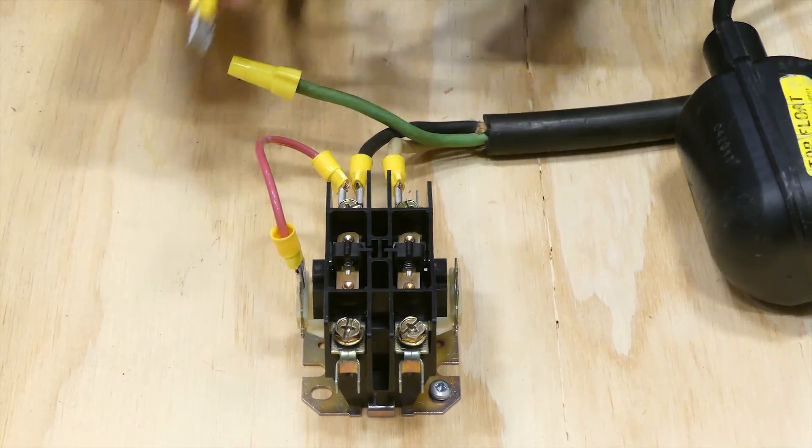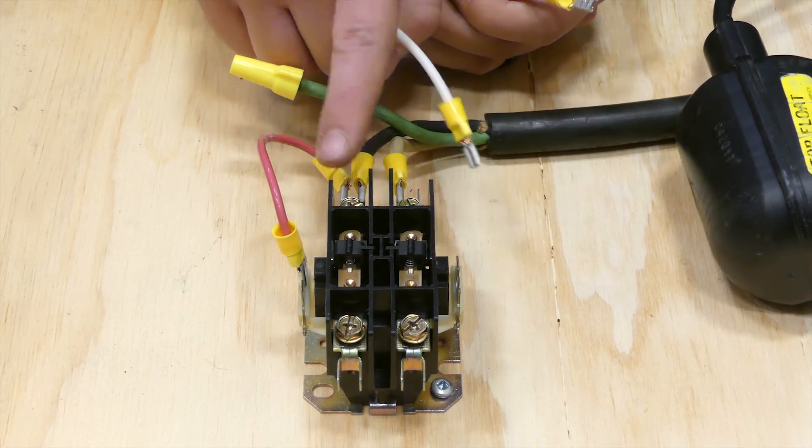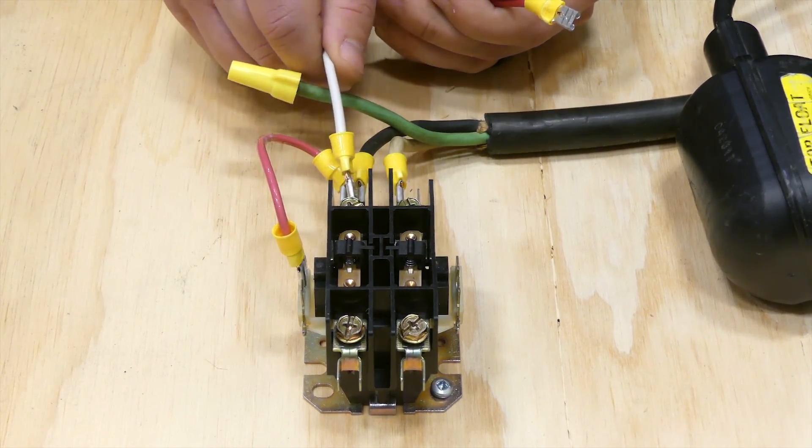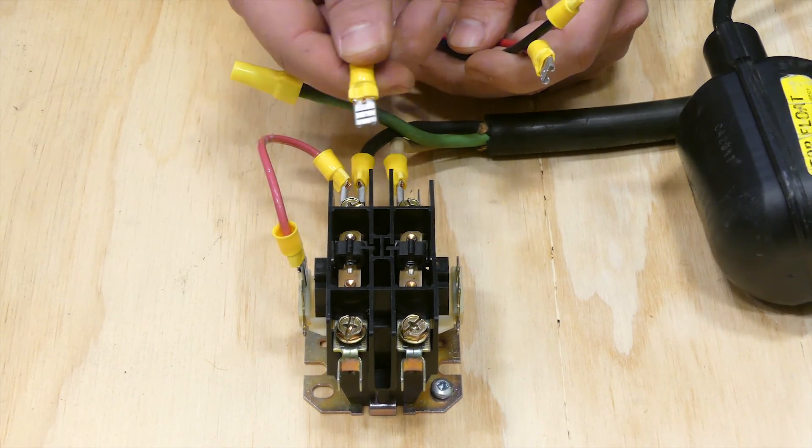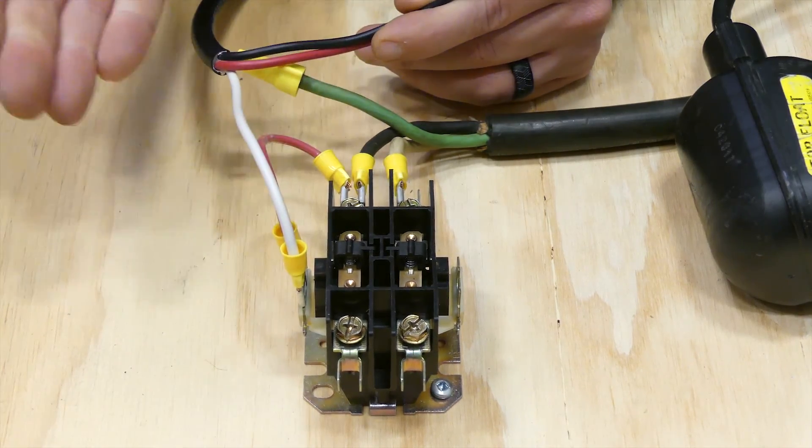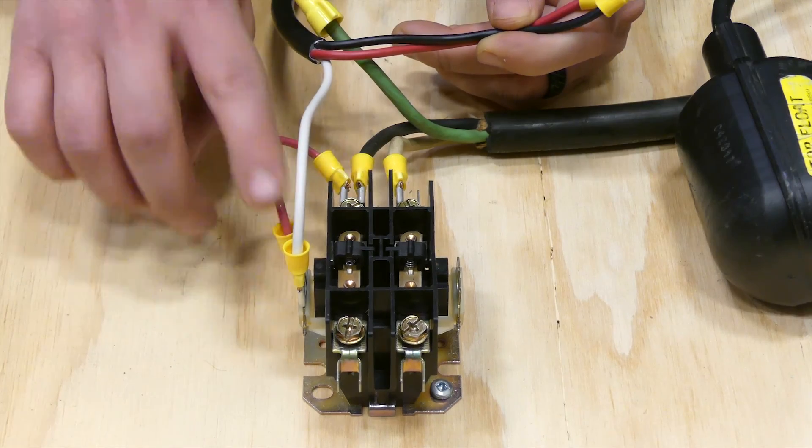What we need to do is this white wire - it was in our diagram shown going right here under this terminal, which is always energized. Since we've got these nice little push-on connectors, if we hook it up over here it's going to do the same thing because we have this jumper going between this point and this point.